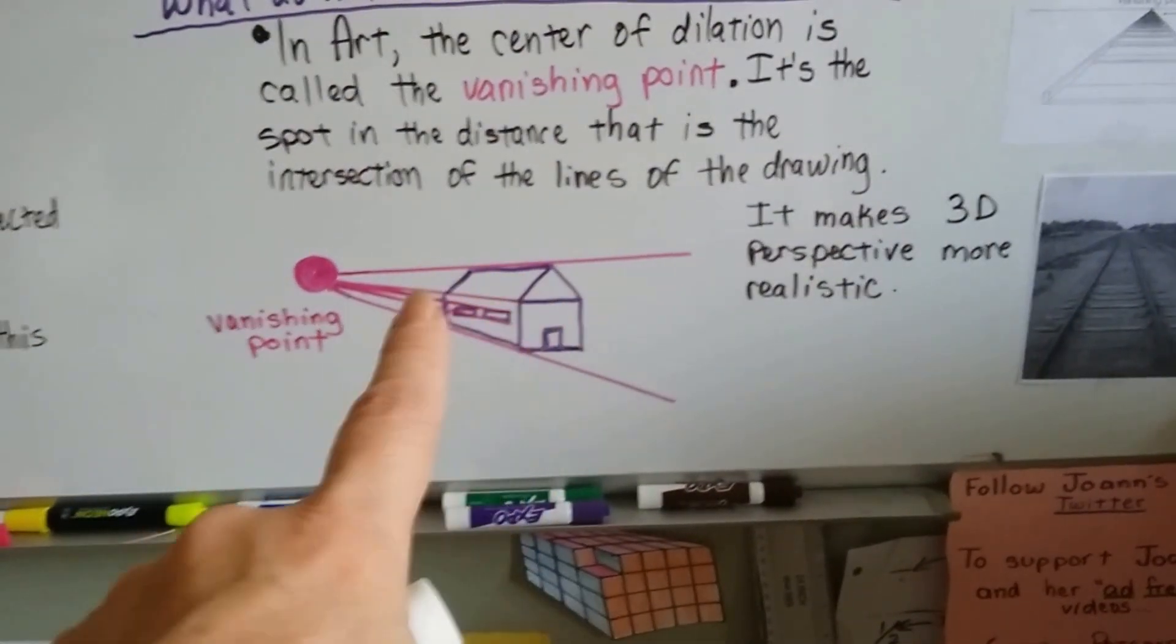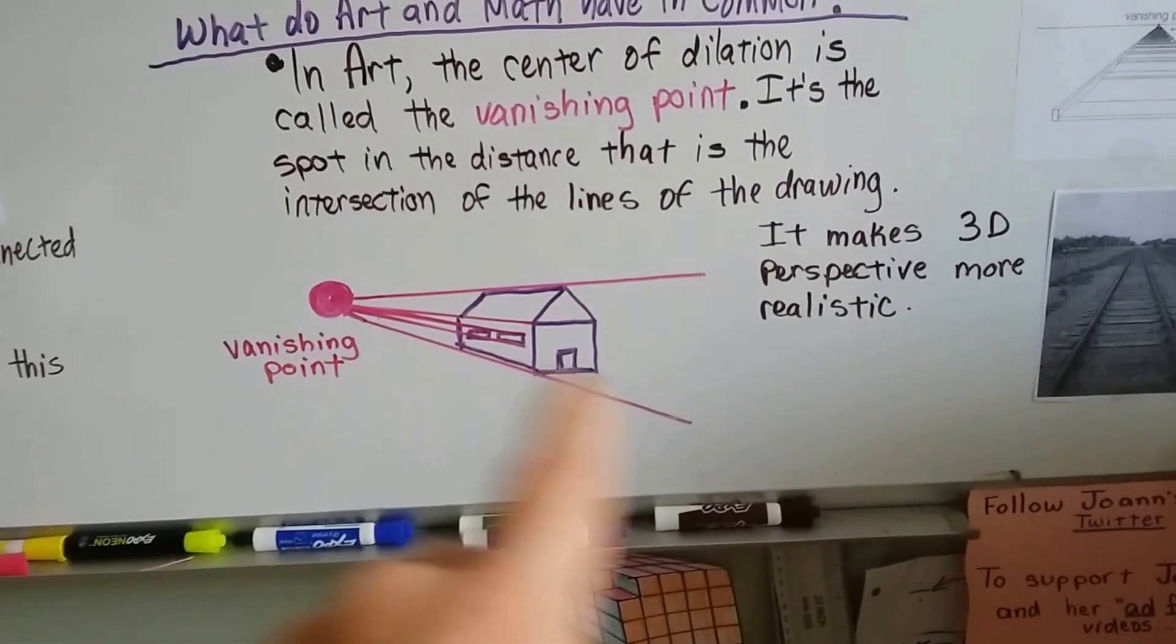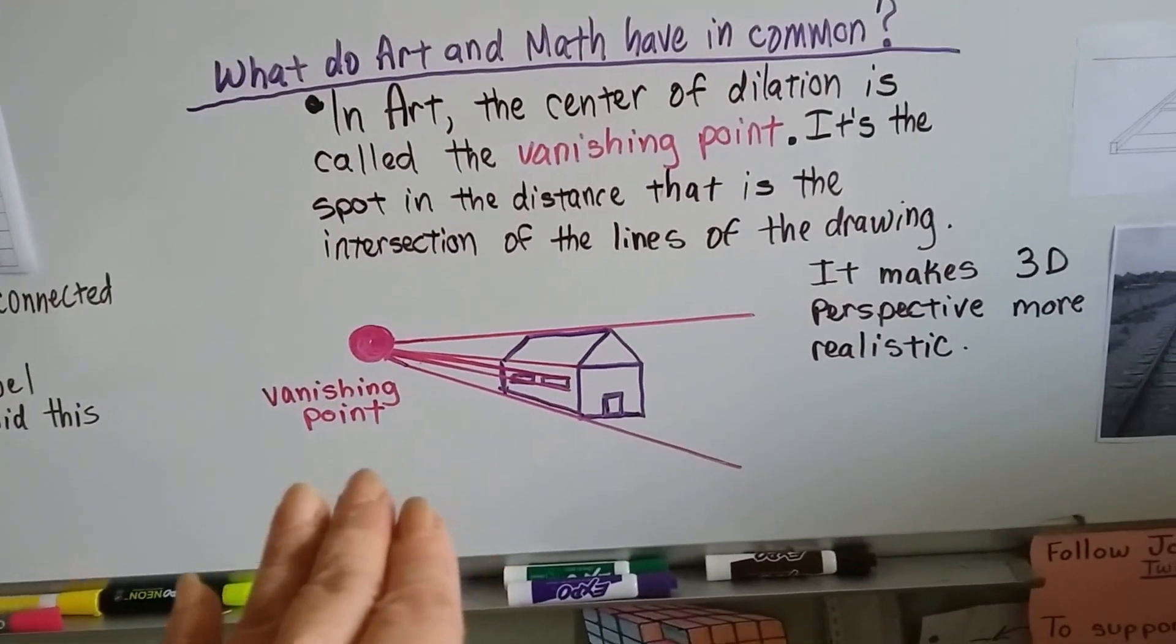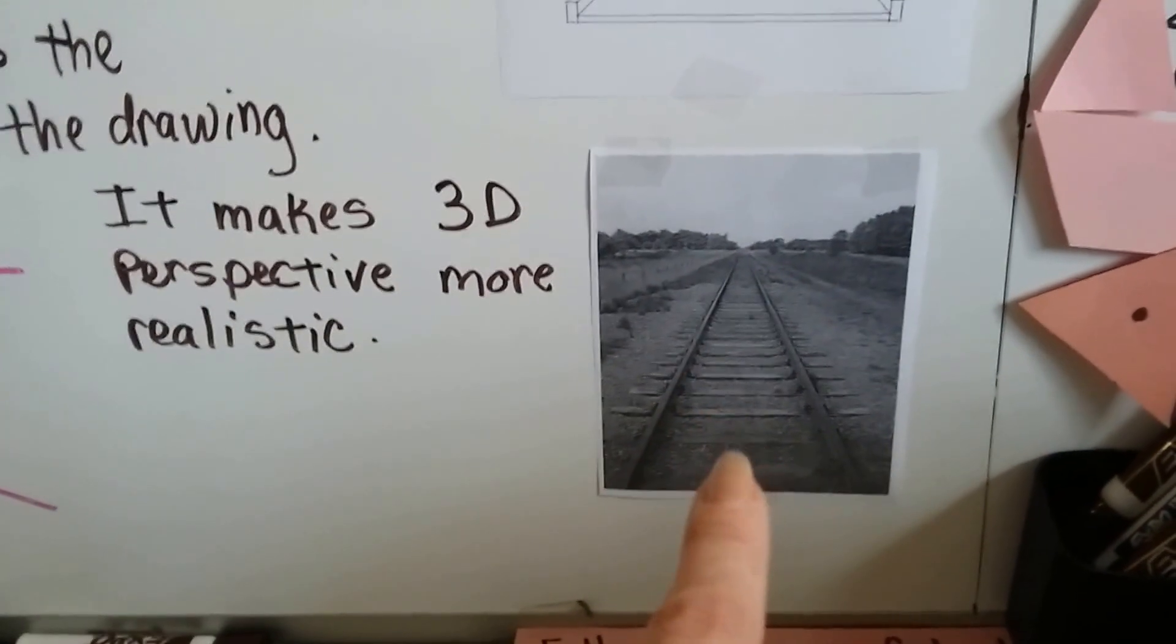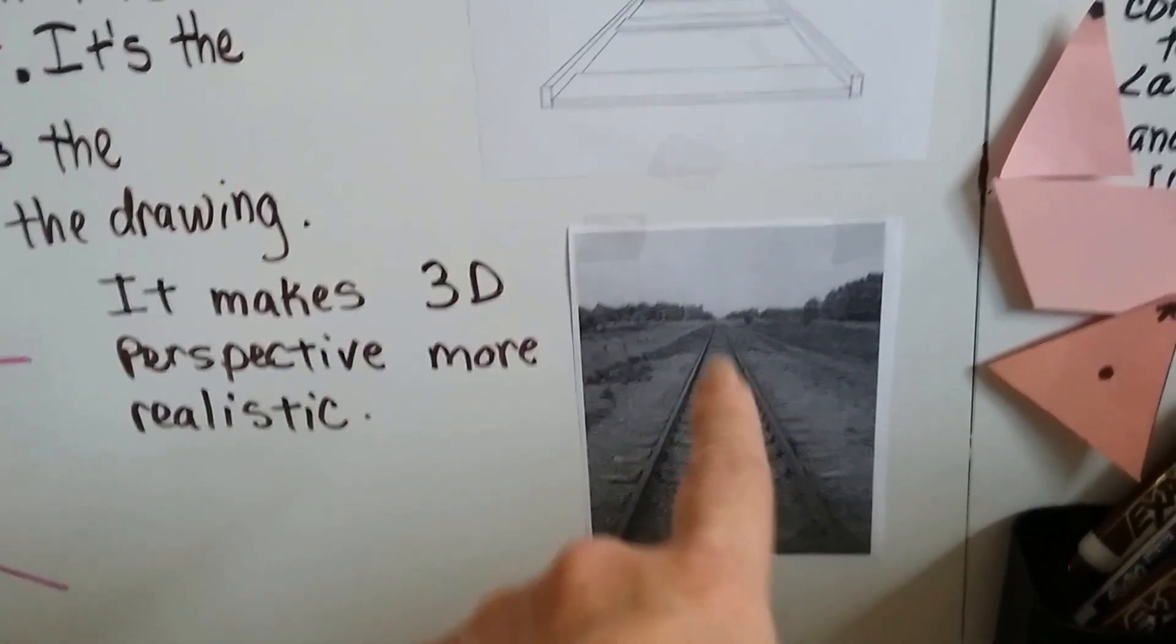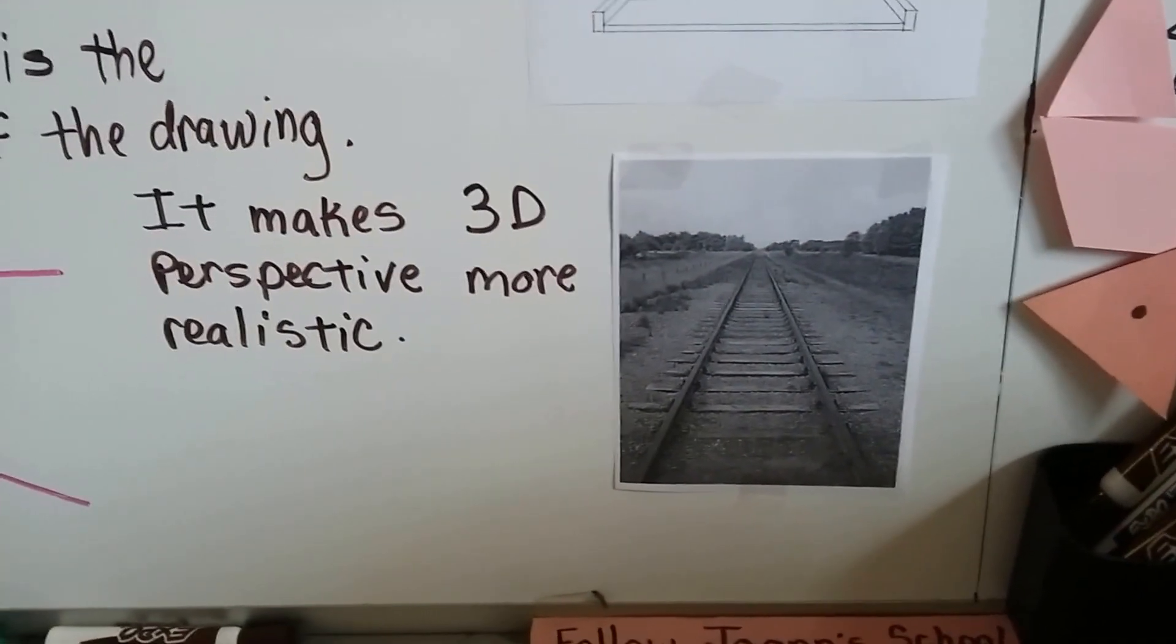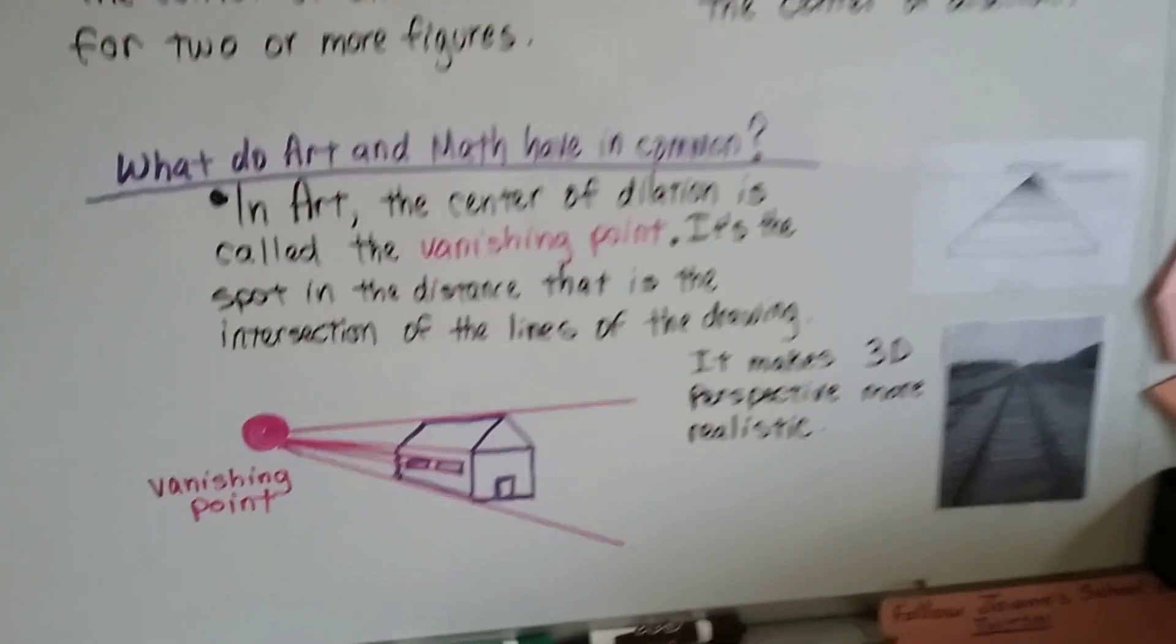It makes 3D perspective more realistic. If you want to draw a house to look 3D, if you have a vanishing point and you draw the lines, you'll be able to draw the edges of the house and the walls and the sides of the roof and even a chimney and make it look very realistic. We've got a picture of railroad tracks. See how the train tracks are vanishing into the distance there? There's the horizon line and the vanishing point is way in the back. That's artwork, that's 3D perspective, that's the center of dilation.